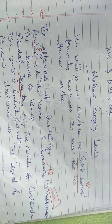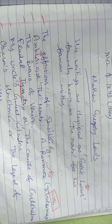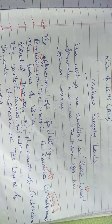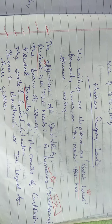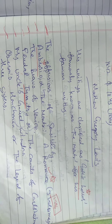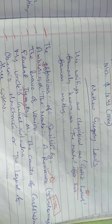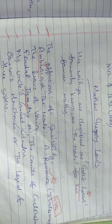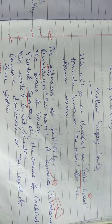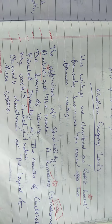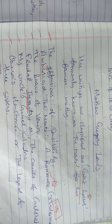Let's learn about Matthew Gregory Lewis today. Matthew Gregory Lewis is one of the Romantic Age writers of English literature, and he is famous as 'Monk Lewis' because he wrote a famous novel named The Monk, for which he was also called Monk Lewis.